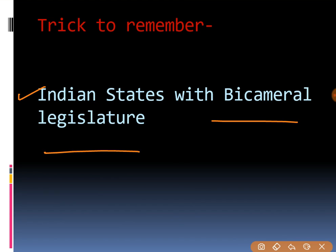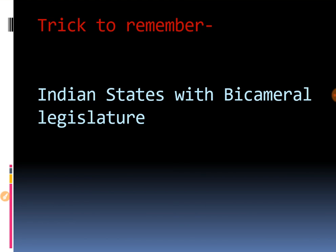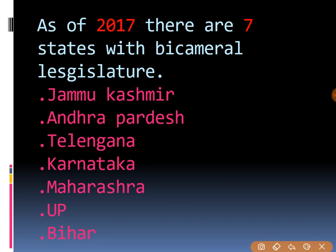Bicameral legislature is the legislature with two houses: the Legislative Council and the Legislative Assembly. Legislative Council is the Vidhan Parishat and Legislative Assembly is the Vidhan Sabha. The upper house is the Legislative Council. As of 2017, there are seven states in India with bicameral legislature.